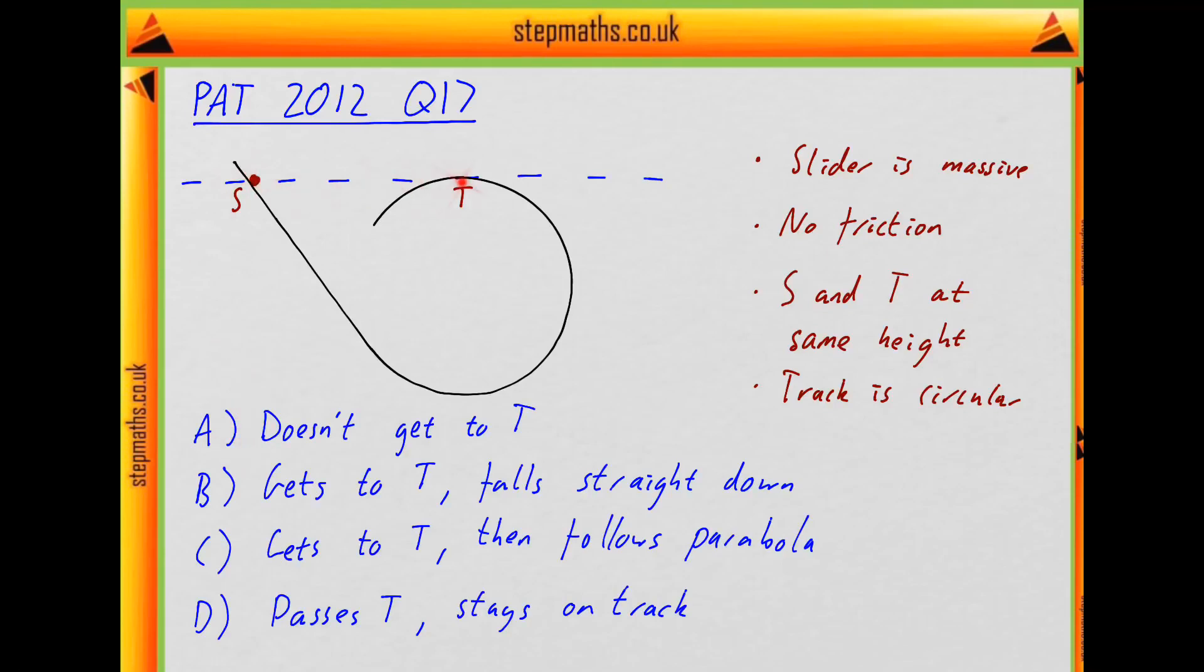So A is that it never gets to T. B is that it goes around, gets to T and then falls straight down. C is that it goes around, gets to T and then follows a parabola to the left. And D is that it does the same thing, but it stays on the track, the circular track past T. So if you want to have a go at figuring out which of these is correct yourself, pause the video now.